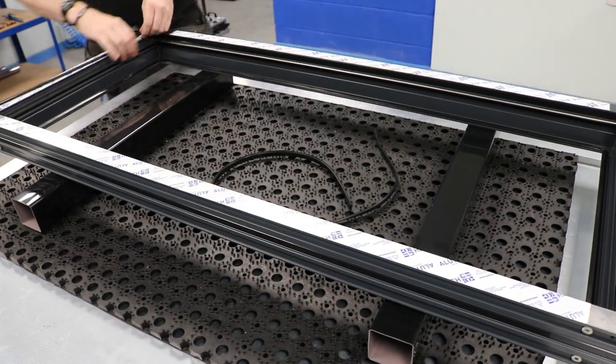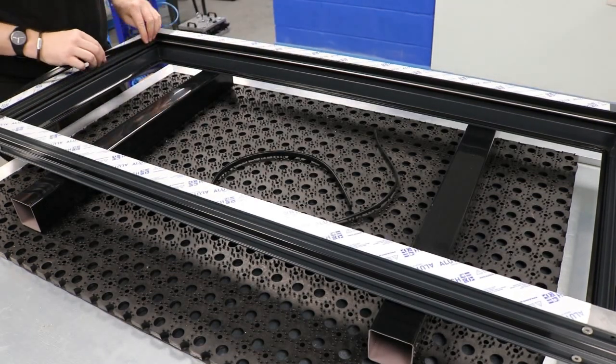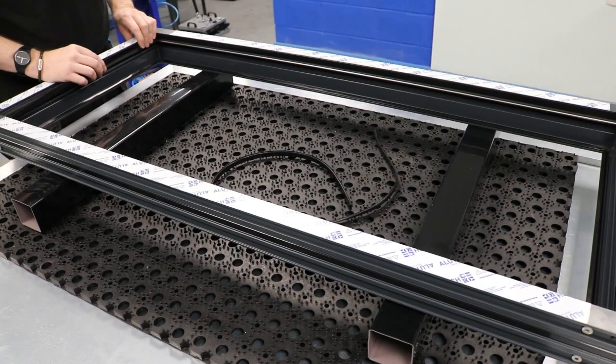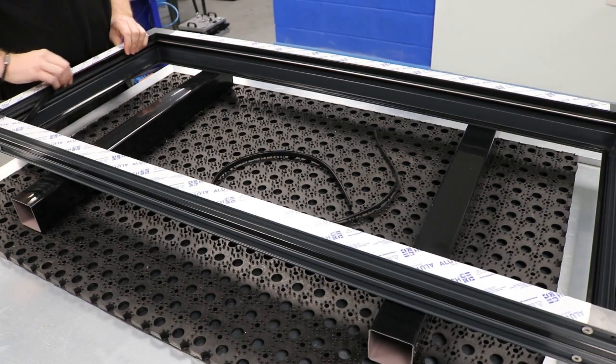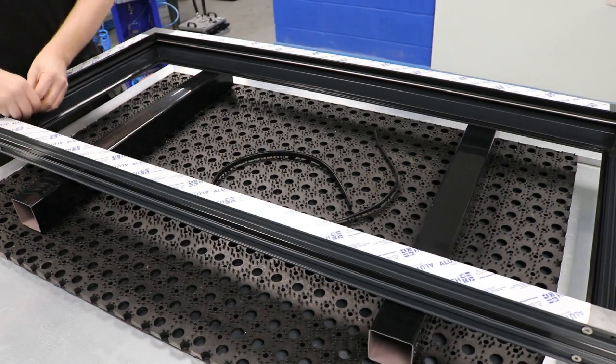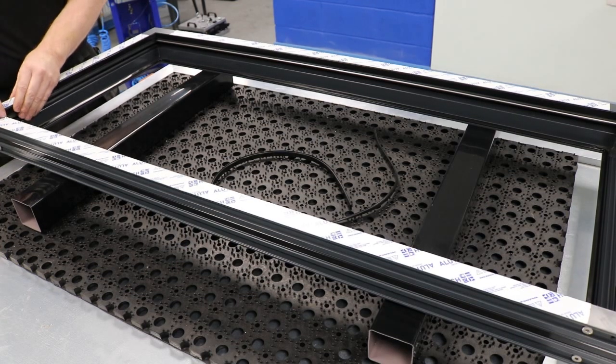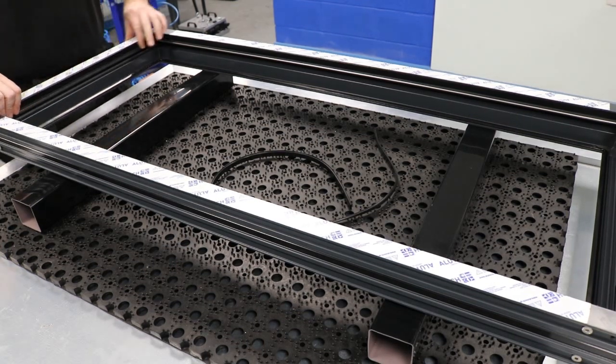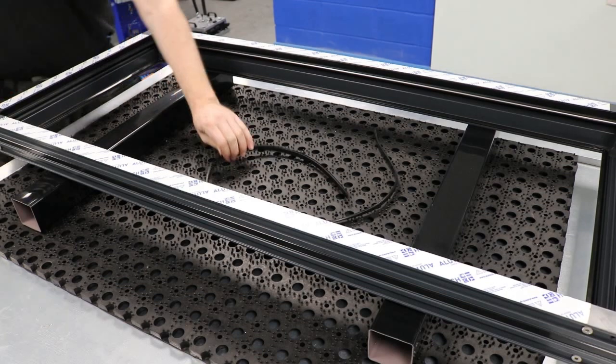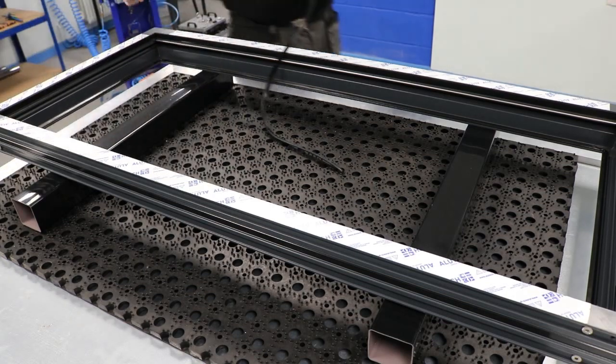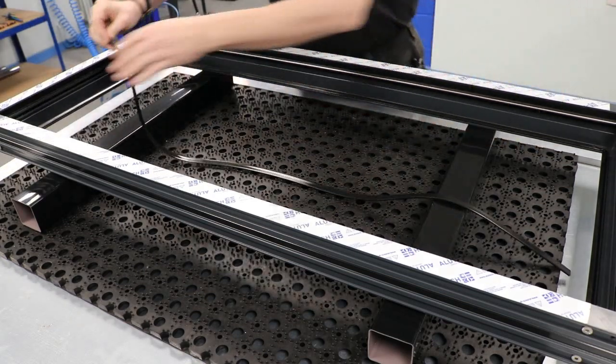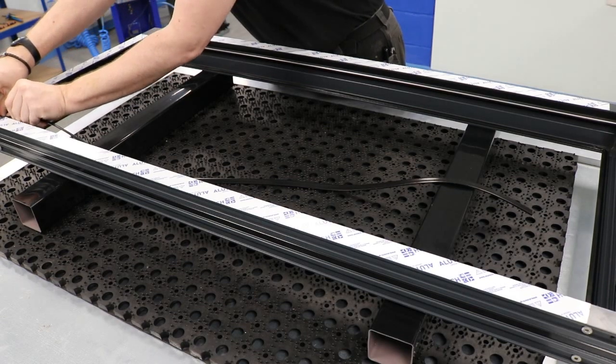Alright, we've also got one for the side, which is going to be the lock side. And we've got one for the top, which is the top, and the gasket I'm pointing at currently is the DBA one.